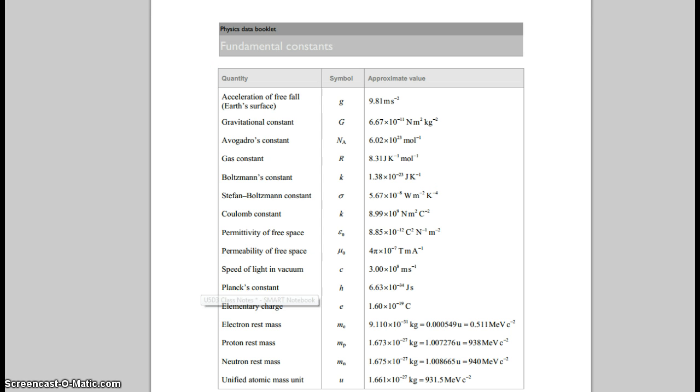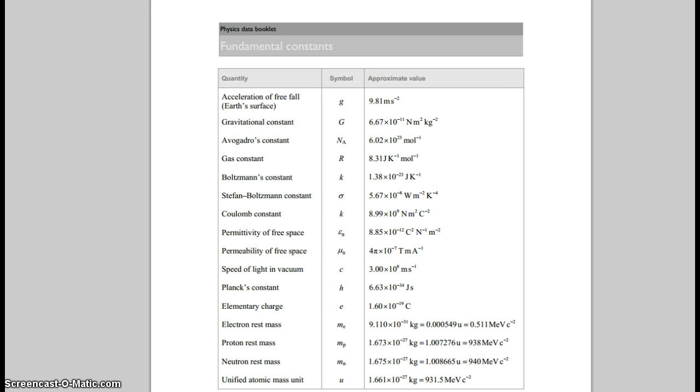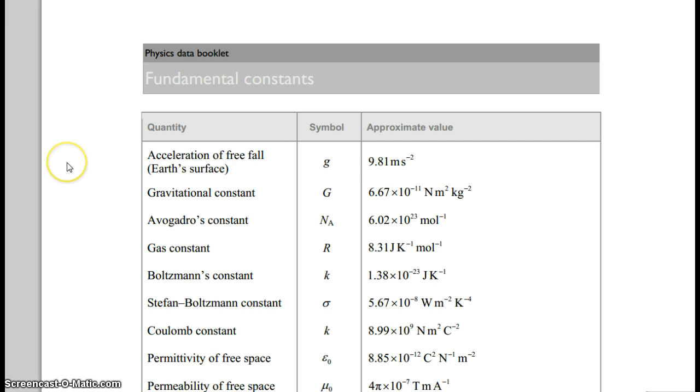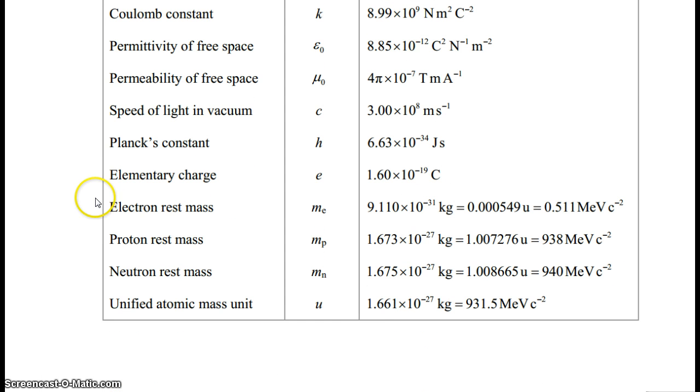And check it out, this is so cool. If we look at the IB physics data booklet, on the page with all of the fundamental constants here, what do they show us at the bottom? Unified atomic mass unit, U is equal to this many kilograms, which equals 931.5 megaelectron volts per C squared.